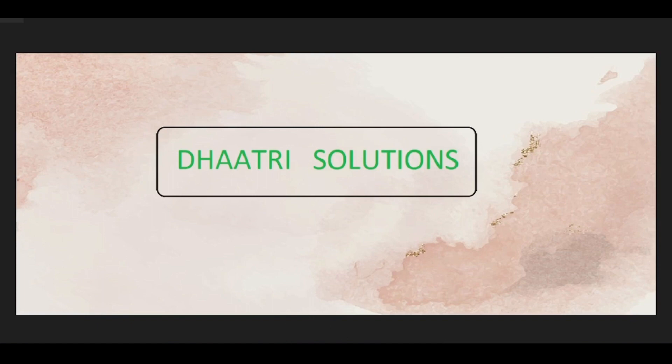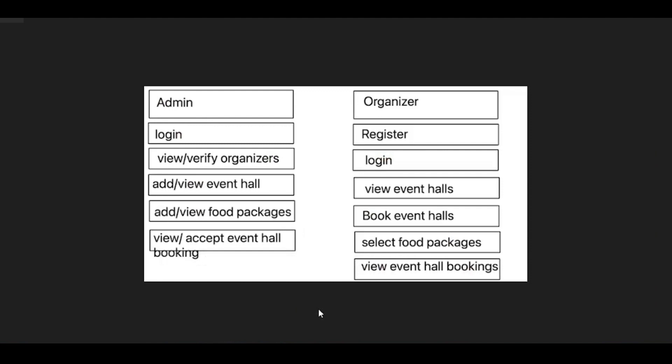You can see the flow of this website. In this website we have two modules: admin and organizer. Admin can log in through this website with username and password. An organizer can register on their own, or admin can also add the organizers. Admin can view the added organizers and verify their accounts — then only the organizers can log in. Admin can add the event halls, view the added event halls, add food packages for those event halls, and also view the food packages.